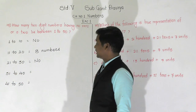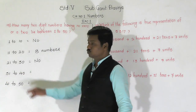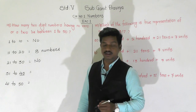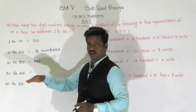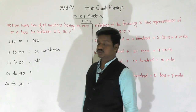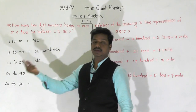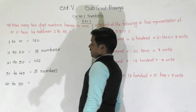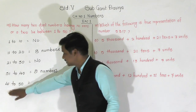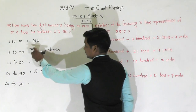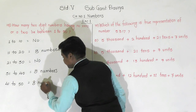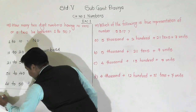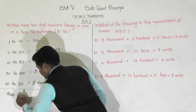Between 31 to 40, there are 10 numbers. The number 40 has 0, so it will be excluded. And 32 has 2, so it will also be excluded. That leaves 8 numbers in this group. Similarly, for 41 to 50, following the same pattern, we get 8 numbers again. So the total is 0 plus 8 plus 0 plus 8 plus 8 equals 24 numbers between 1 to 50 having no 0 or 2.